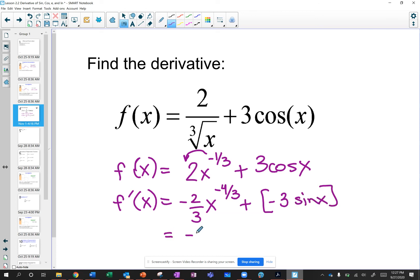So if I clean this up, I get negative 2 over 3x to the 4 thirds. We always rewrite our negative exponents as positive minus 3 sine of x. Okay, let's have you practice some now.